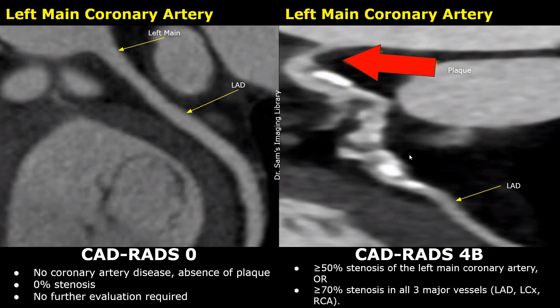In CADRADS-4B, there is a stenosis of 50% or more in the left main coronary artery, or if there is more than 70% stenosis in all three major coronary arteries — the left descending, left circumflex, and the right coronary artery. In this normal image, this is the left main coronary artery. There is no narrowing of the lumen and no presence of any plaque. The enhancement is normal.